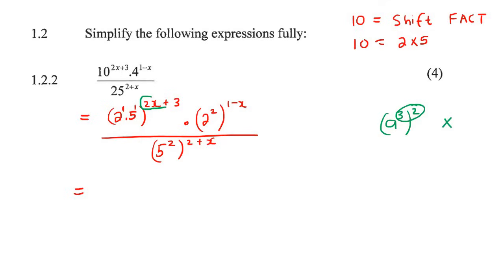So what we're going to do now is we're going to take this 2x plus 3, and we're going to multiply it to there and to there. Then we're going to do the same with this one and that 2, and then we're going to do the same with this one and that 2. And so that's going to become 2 to the power of 2x plus 3, and then 5 to the power of 2x plus 3. And then this one is going to become 2 to the power of 2 minus 2x.